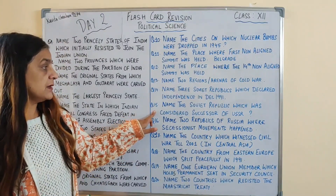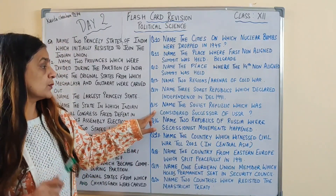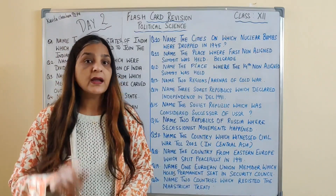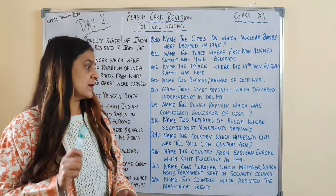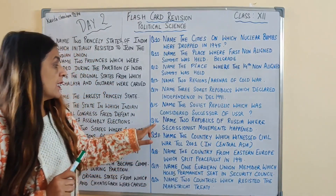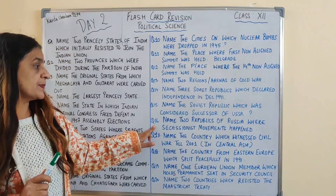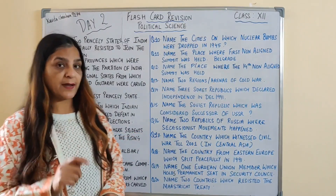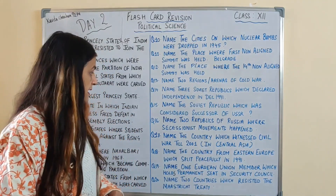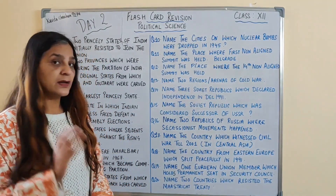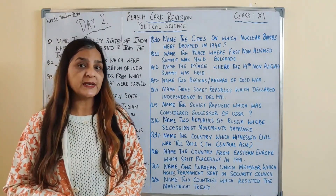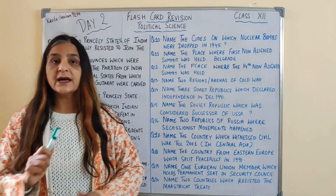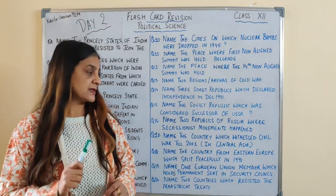Question number 15: name the Soviet republic which was considered as the successor of the USSR, and the answer to this question is Russia. Question number 16: name two republics of Russia where secessionist movements happened. Soviet Union ki disintegration ke baad Russia mein kaunse aise do republics the jahan pe secessionist movements hui, and the answer is Chechnya and Tajikistan.